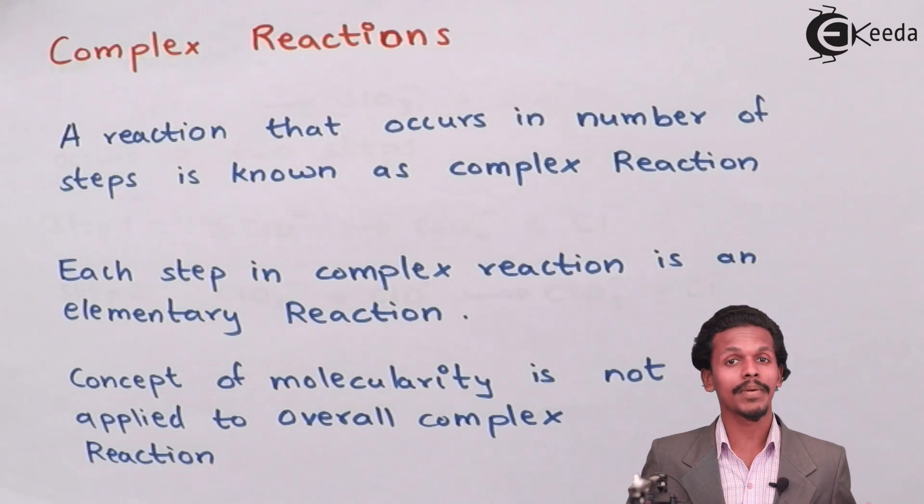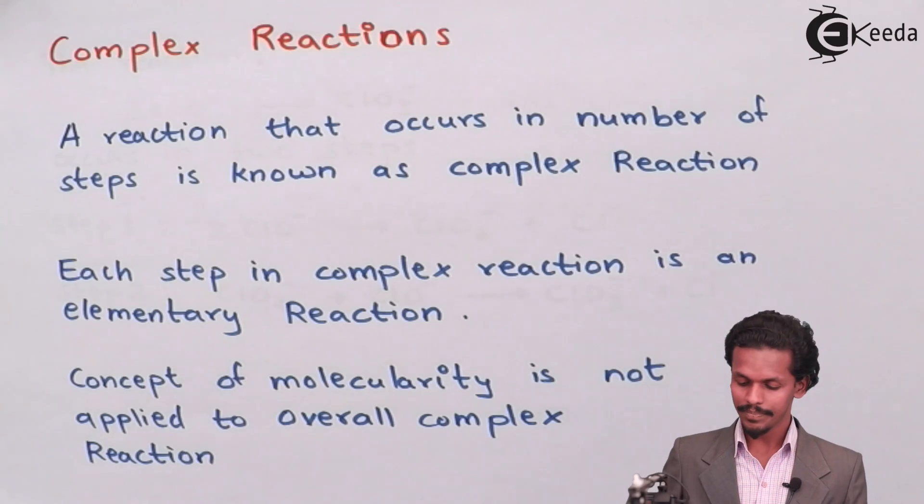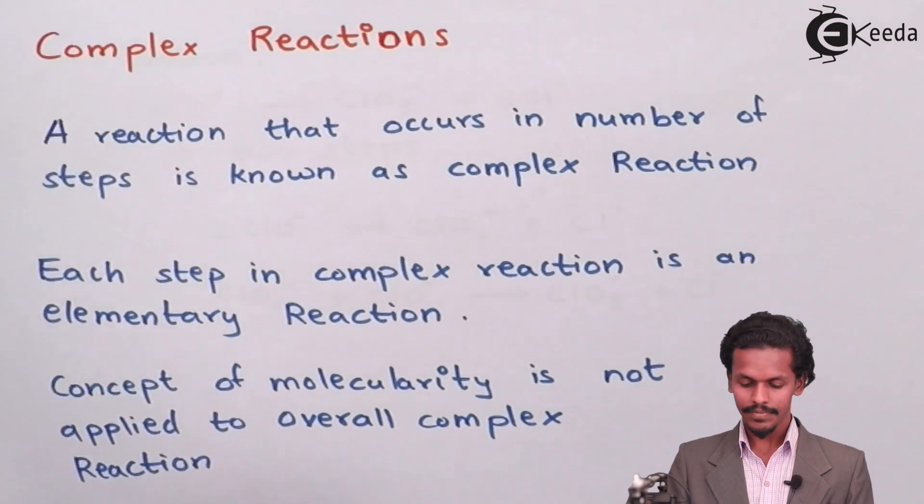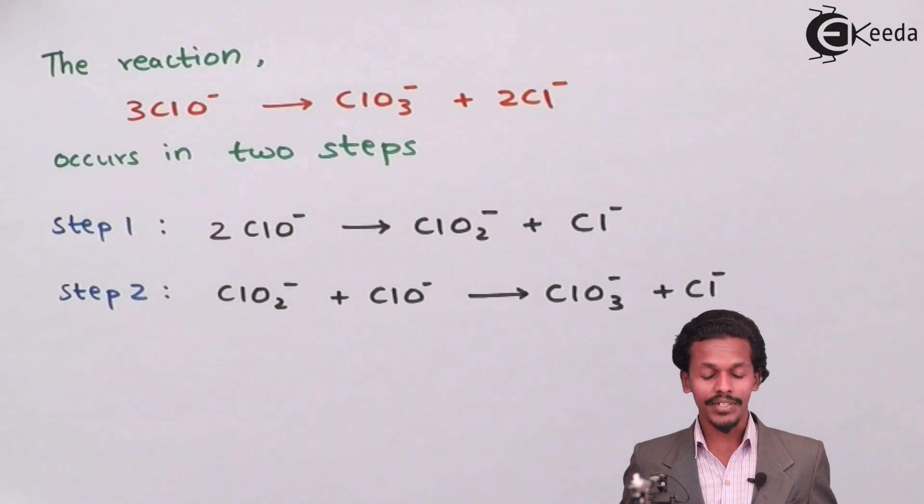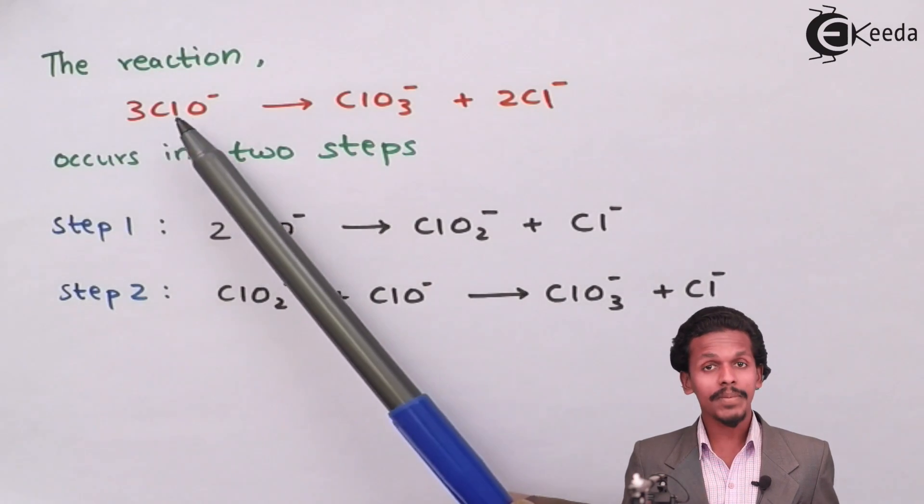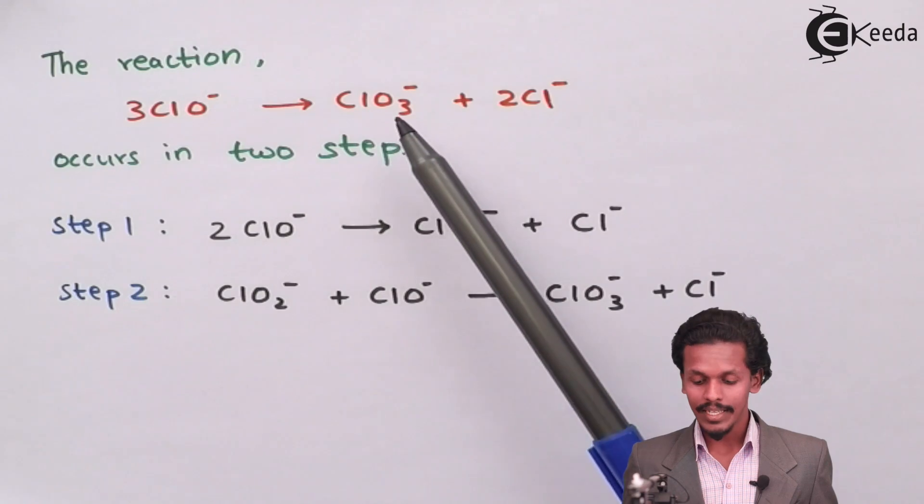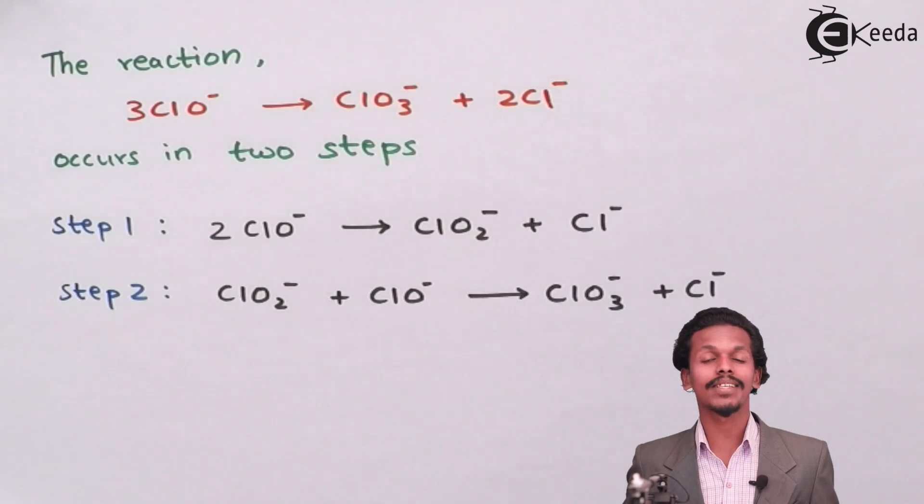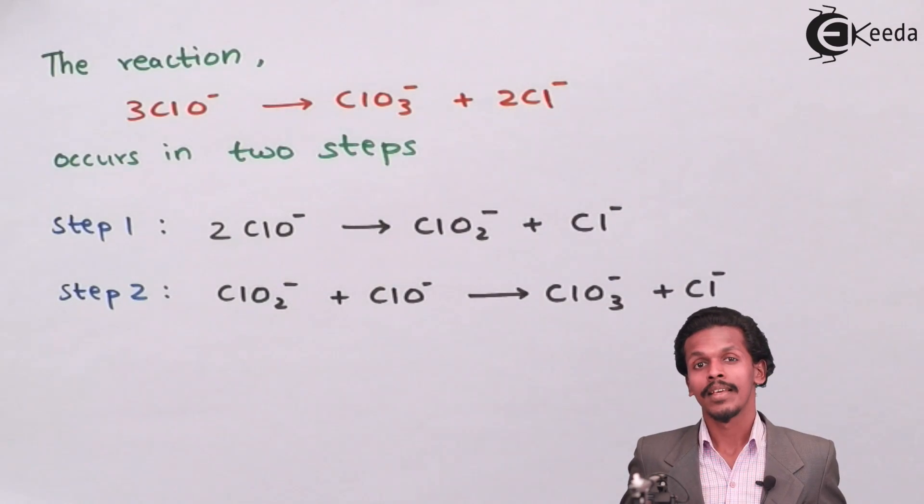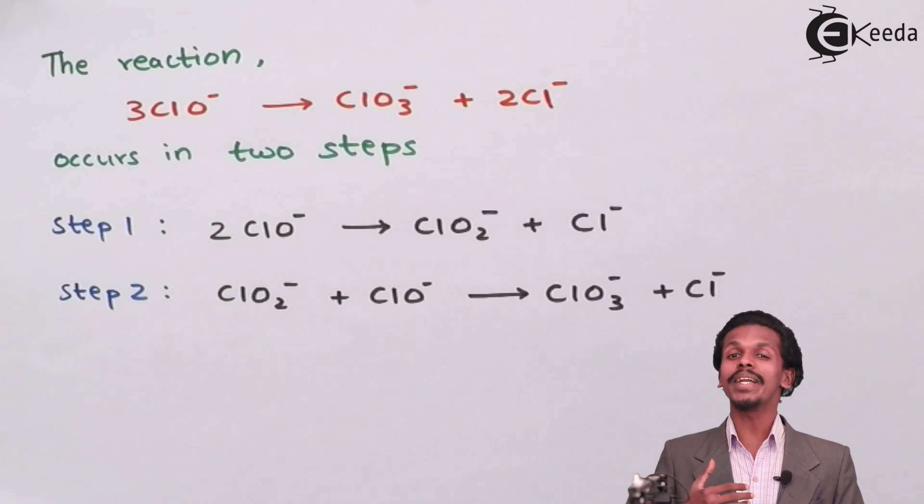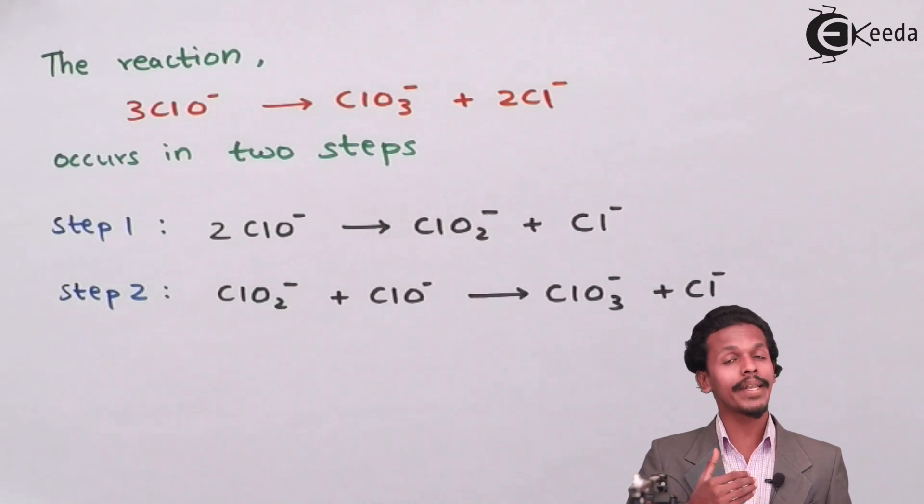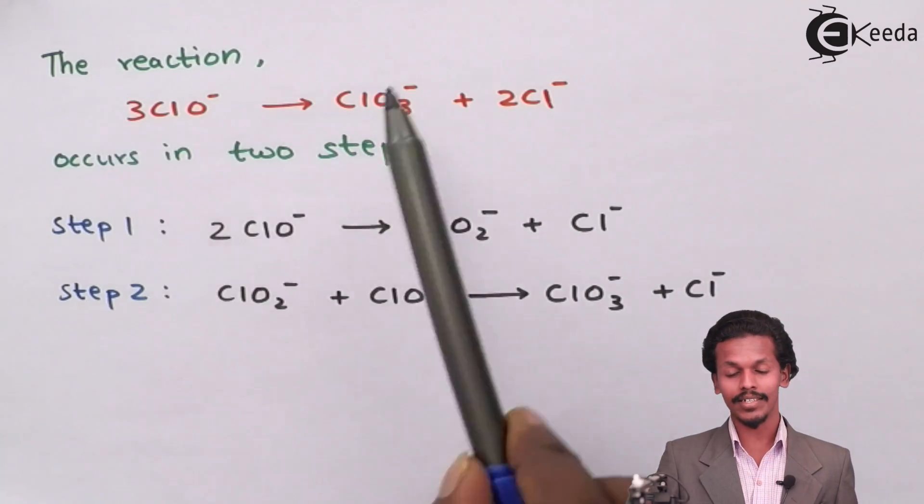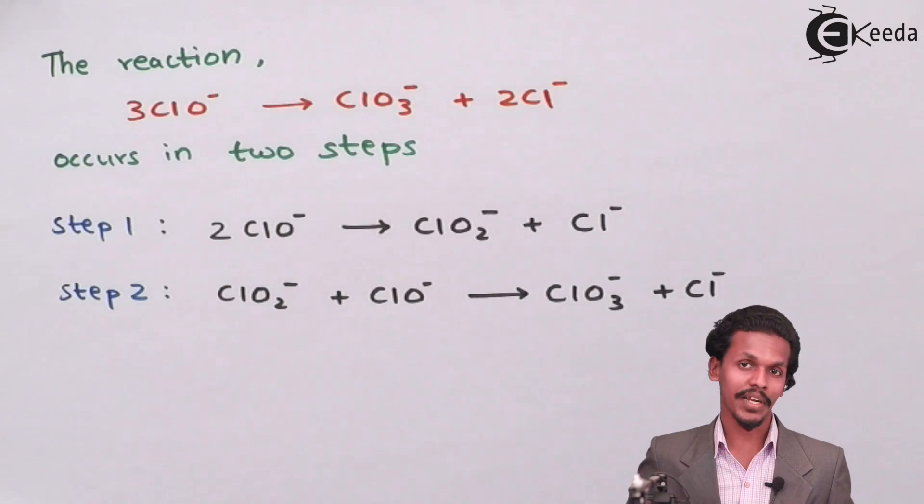Let us understand this concept with the help of an example. This is the reaction where 3ClO- will give you ClO3- plus 2Cl-. This reaction can be divided into multiple steps and hence this reaction is said to be a complex reaction.